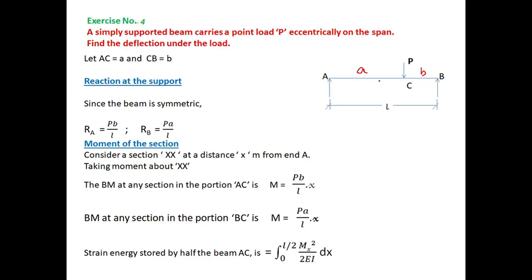Let's do portion A. The total length is L. Now we have the reactions. Because it is not symmetric, R_A is equal to PB divided by L, and R_B is equal to PA divided by L. This is the reaction for a simply supported beam with eccentric load.